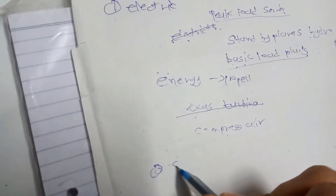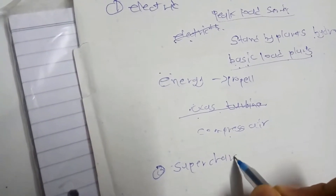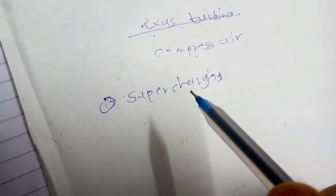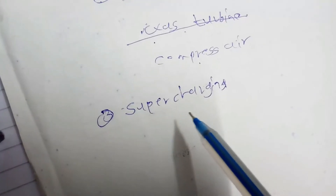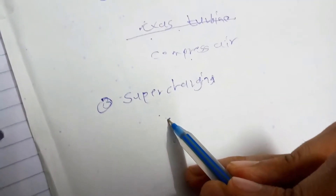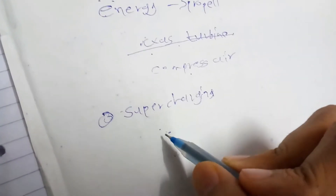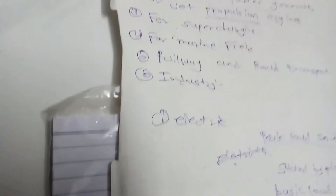The third application is supercharging. Supercharging is used to make a smooth flow of fuel so we can run our engine with high efficiency. In supercharging, the gas turbine is used to compress the air.